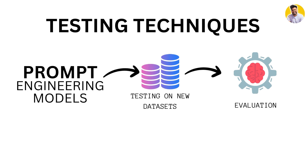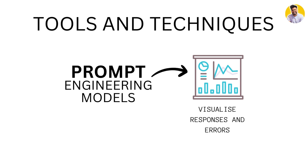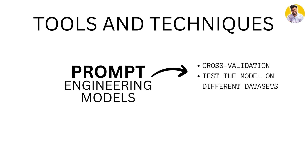Testing prompt engineering models on different data sets or different tasks is also an important step in evaluating performance. By testing on different data or tasks, we can determine the model's ability to generalize to new or unseen data. To accomplish this, we can use a variety of tools and techniques — for example, visualization tools to analyze generated responses, or testing techniques such as cross-validation to test the model on different data sets.